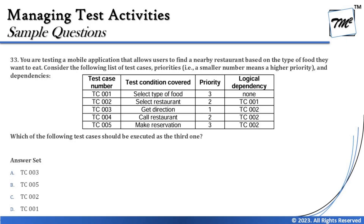Today we shall continue to see more remaining questions from Chapter 5 and try to find the tips and tricks related to them. Question 33 is about testing a mobile application that allows users to find a nearby restaurant based on the type of food they want. Consider the following list of test case priorities — a smaller number means higher priority — and dependencies.